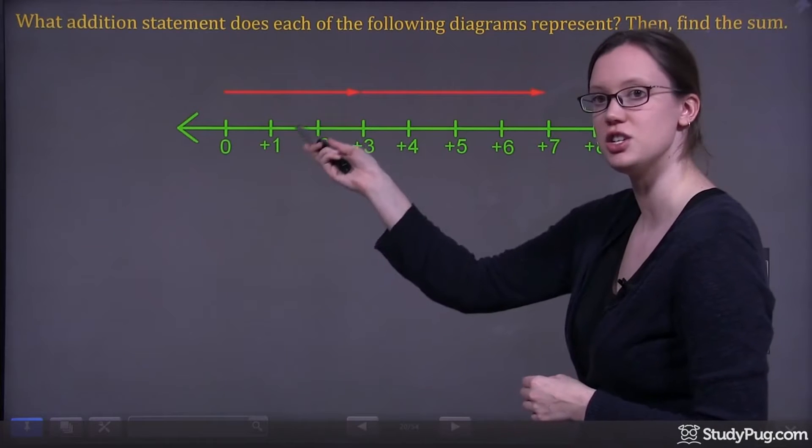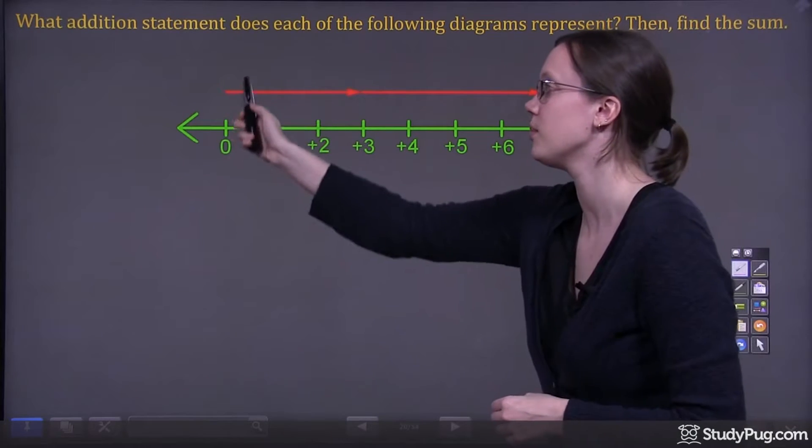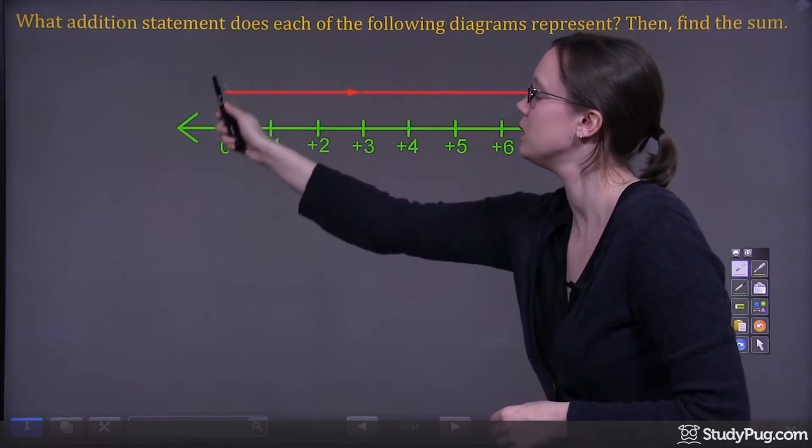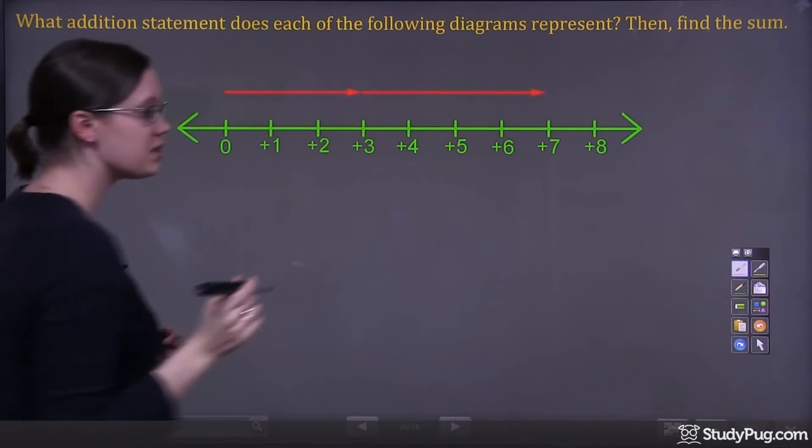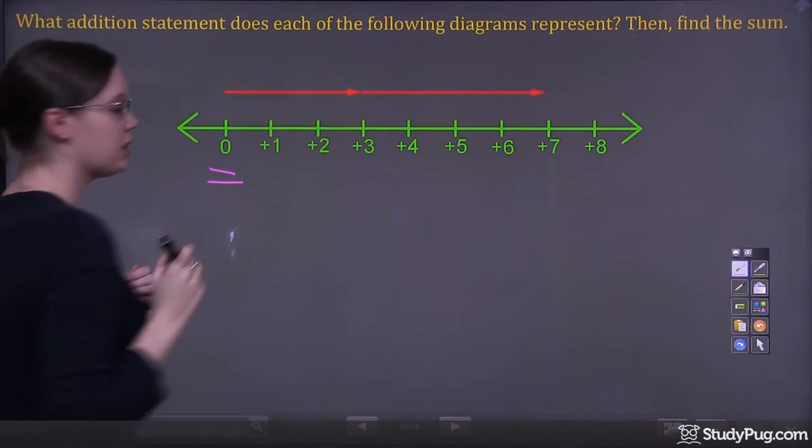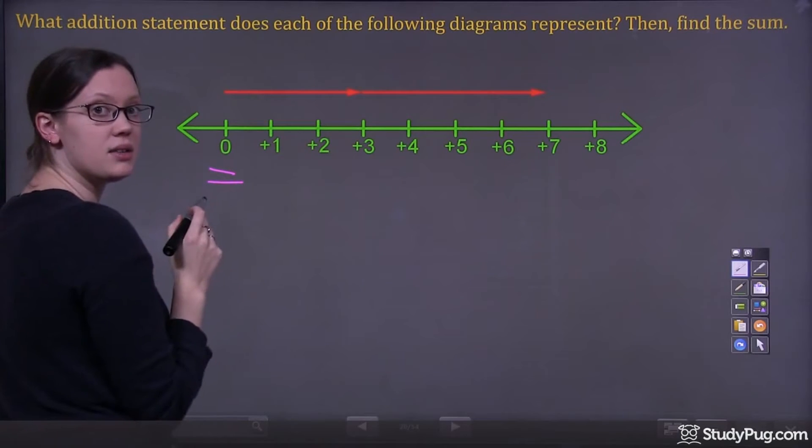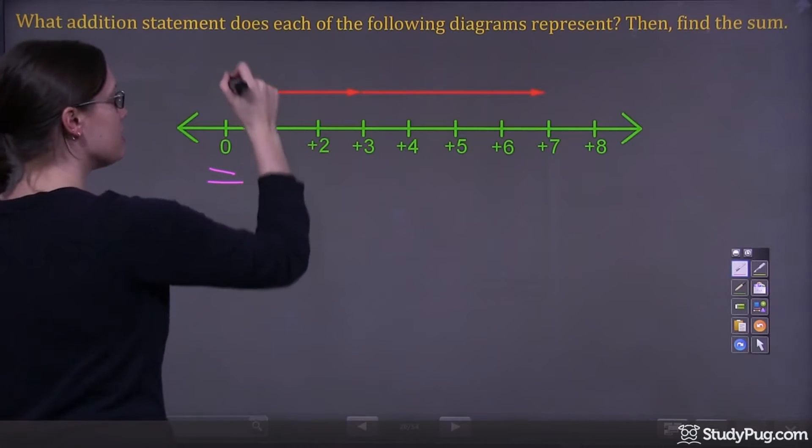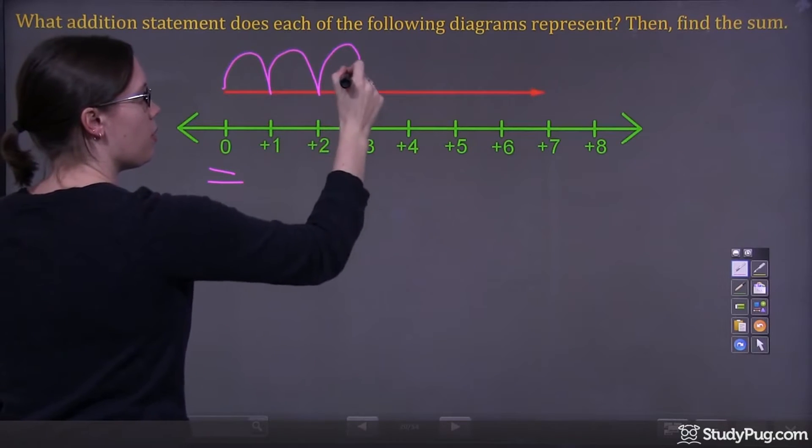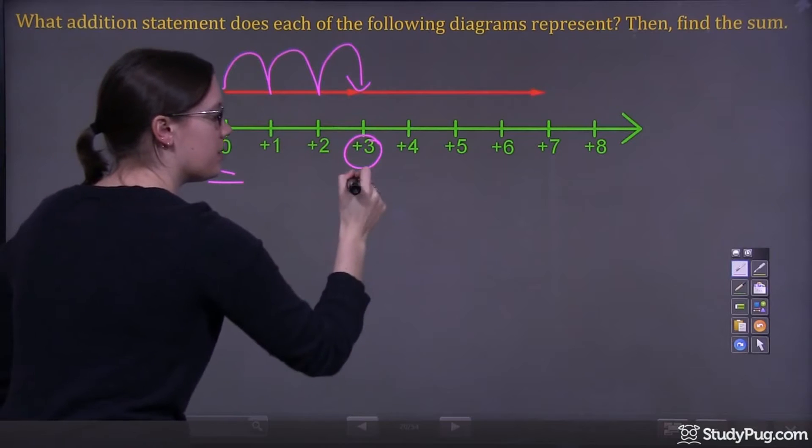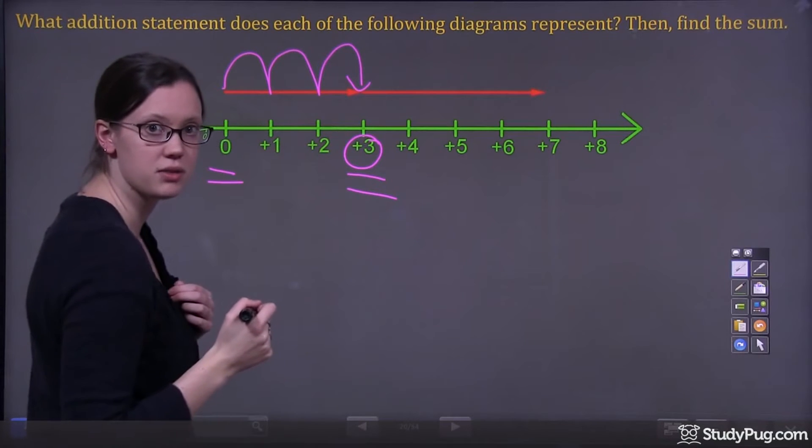Let's first pay attention to this arrow here. Now this arrow, it starts at zero. And it ends where? It ends 1, 2, 3. It ends at positive 3.